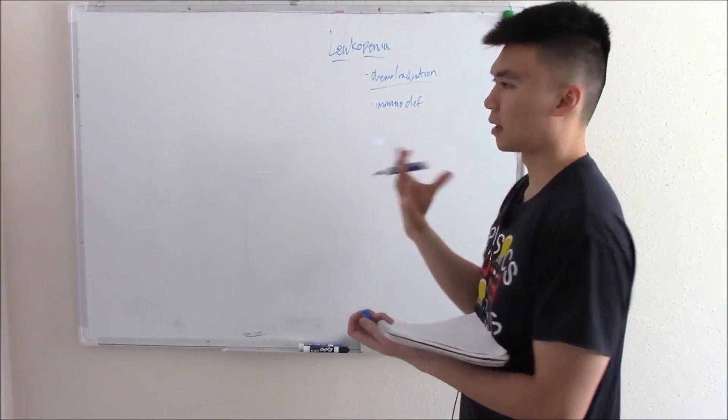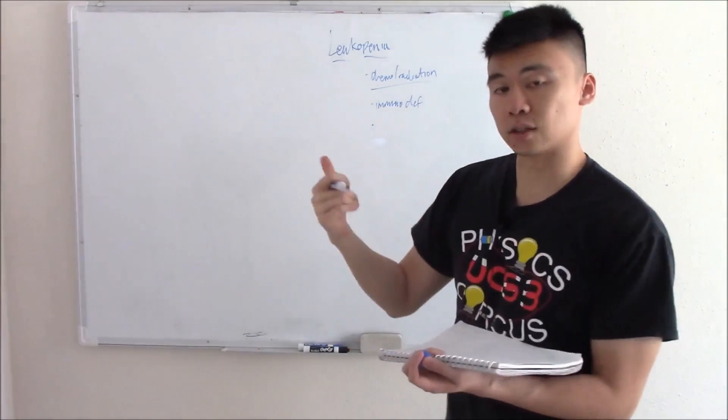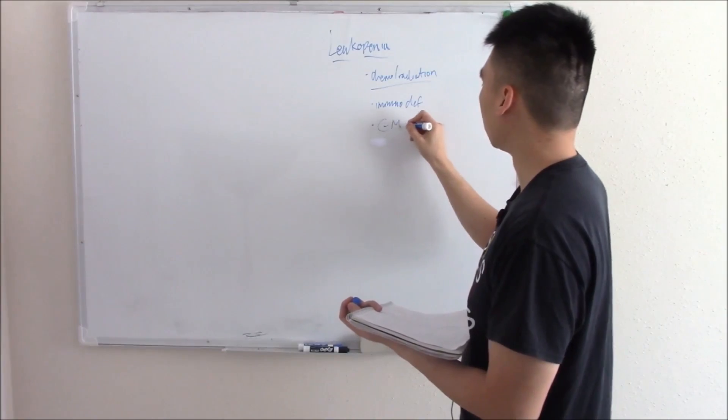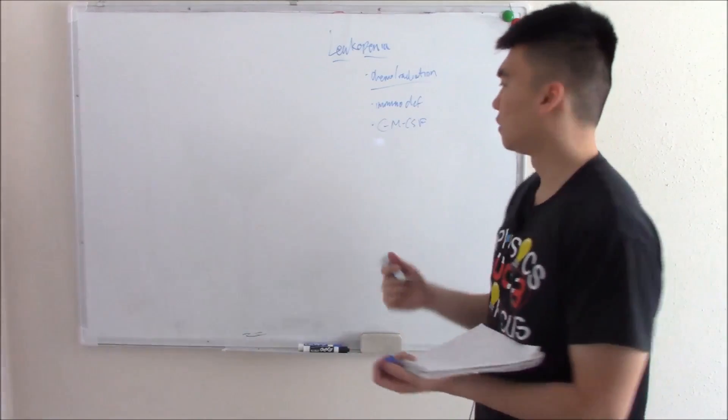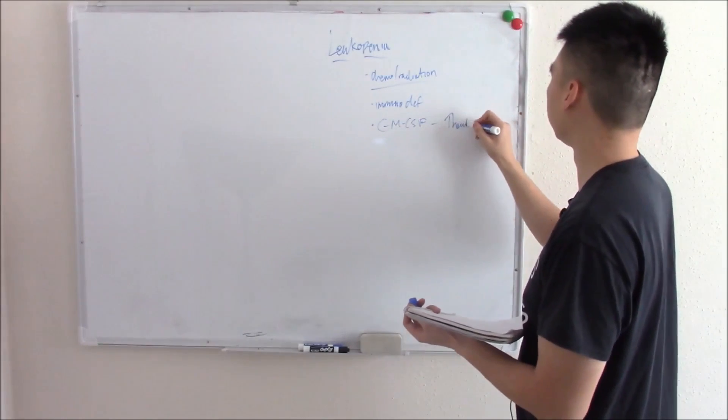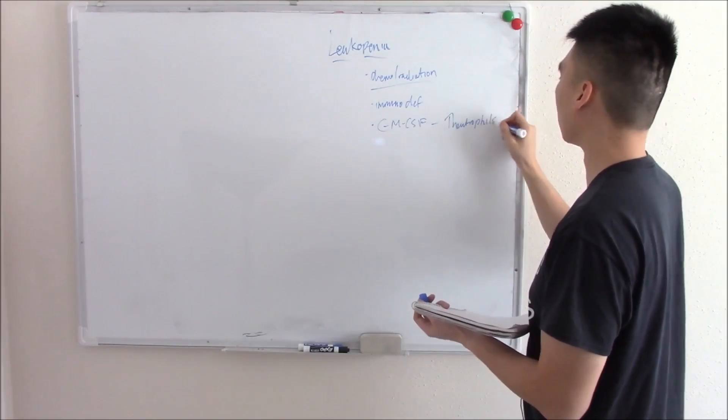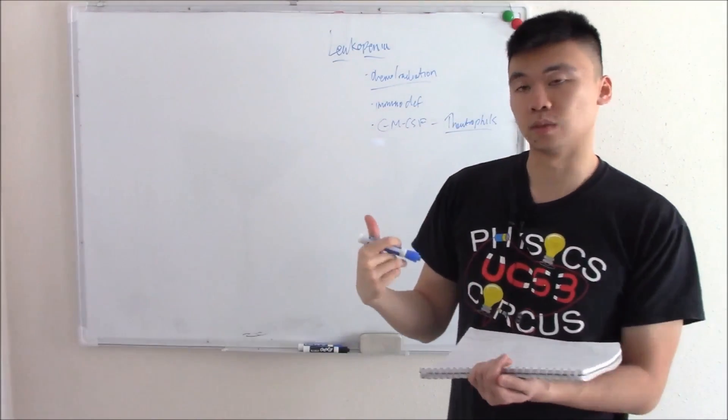Unfortunately, there's not a lot of drugs that can increase your white blood cell count. One we can increase is neutrophils. We can give something called GM-CSF or granulocyte colony stimulating factor, which is a cytokine that can increase neutrophils. But for the most part, it's pretty difficult to increase white blood cell count.